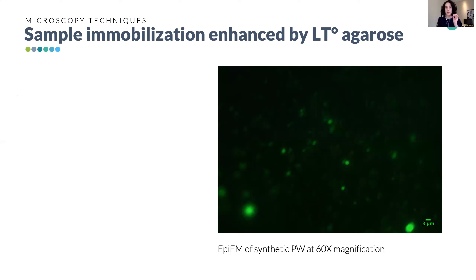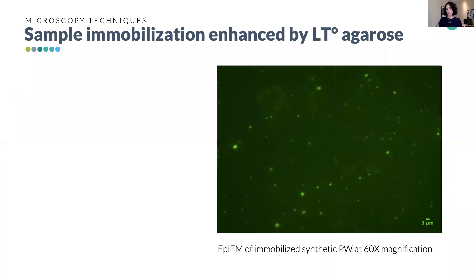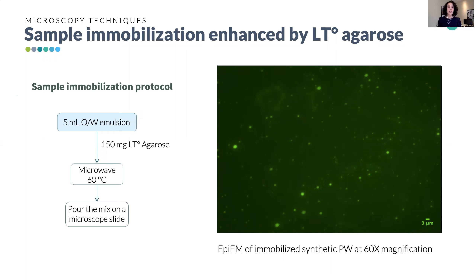For the first step — sample immobilization — if you put the liquid sample as-is in the microscope, it looks blurry because of Brownian motion and we cannot use those images. After many trials, the best protocol we found was gelling the emulsion with low-temperature agarose. This creates a very thin layer of gel on the microscope slide which can be stored in a freezer for weeks to be analyzed. After immobilization the image shows much better contrast.